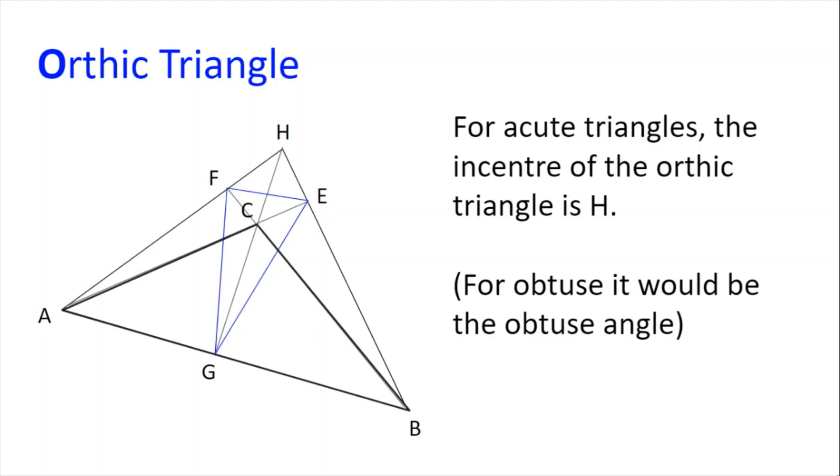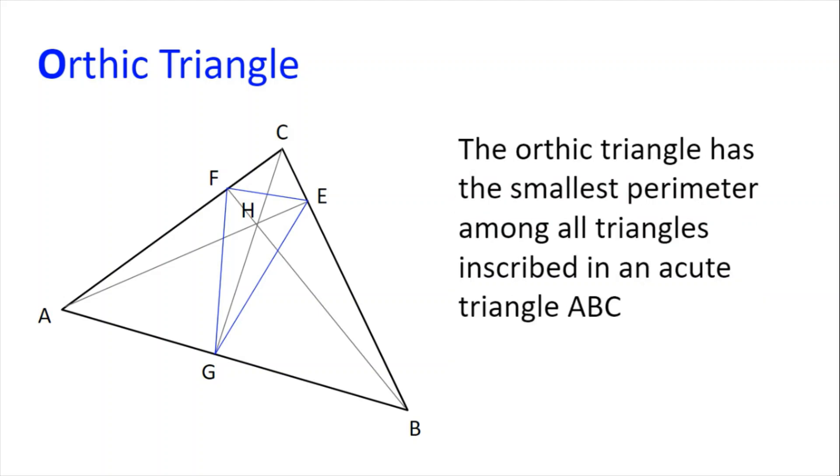For obtuse triangles, it would be the vertex with the obtuse angle. A useful fact to keep in mind is that the area of a triangle is the semi-perimeter of that triangle multiplied by the in-radius of that triangle. Finally, the orthic triangle has the smallest perimeter among all triangles inscribed in an acute triangle ABC.